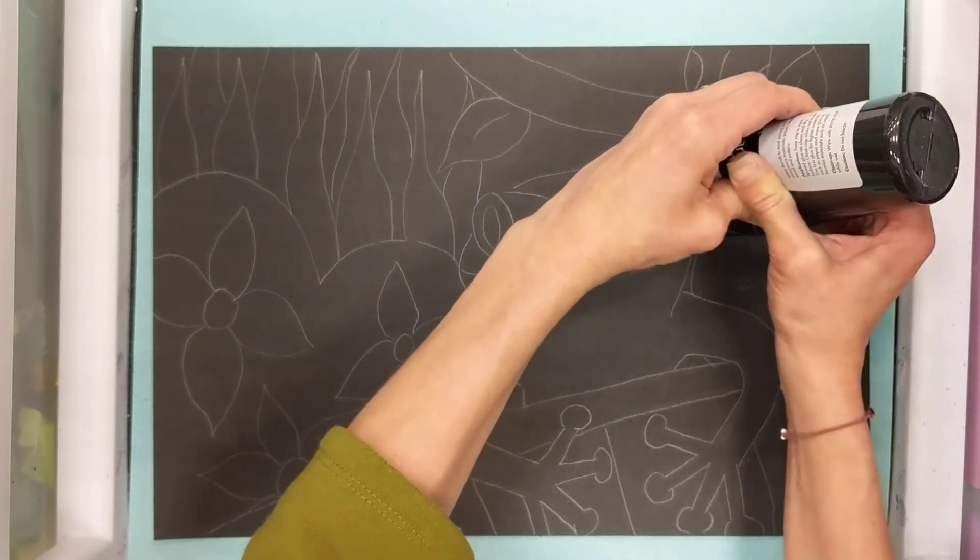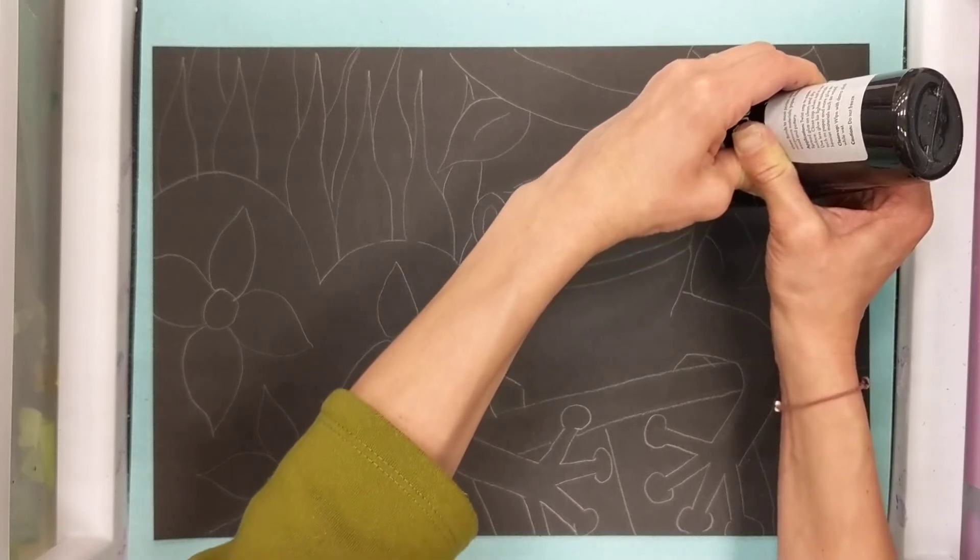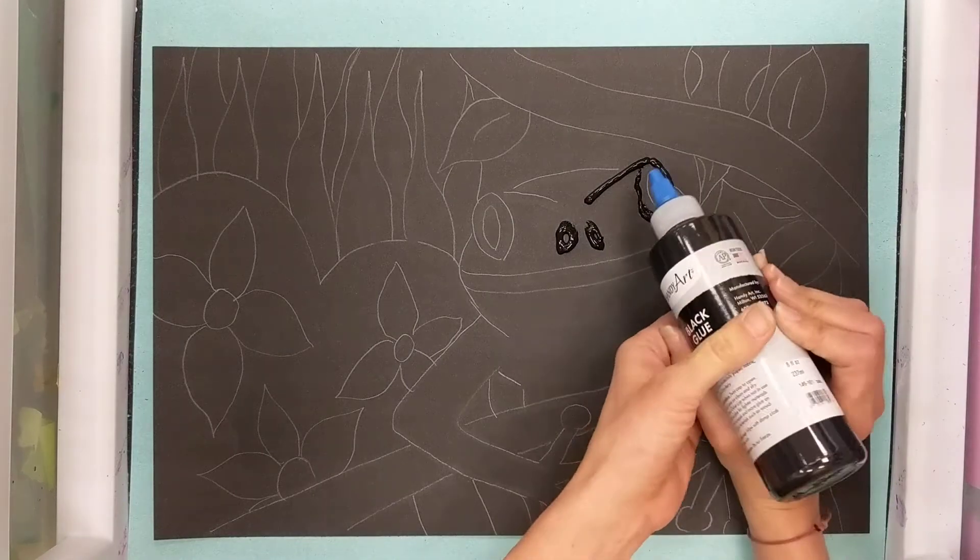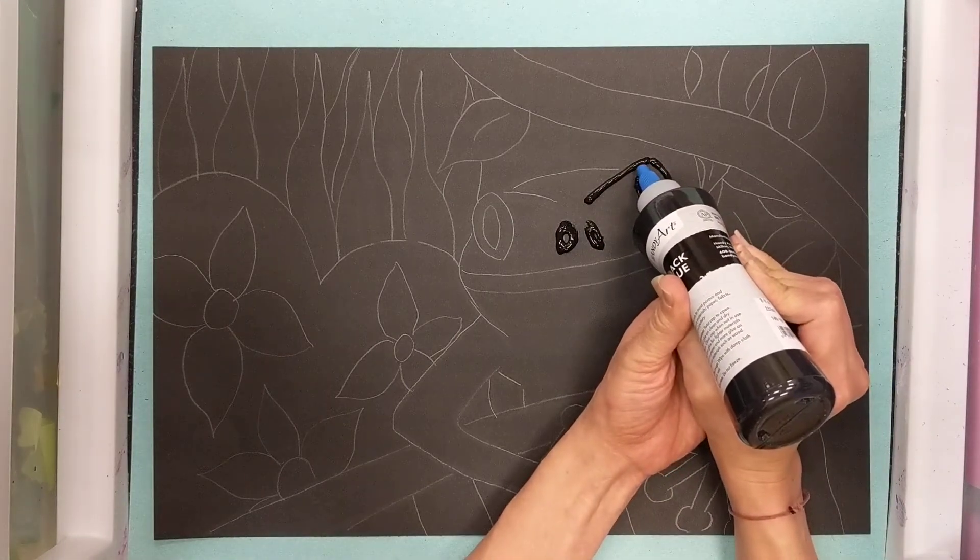I kind of squeeze and go and if it's ever feeling like it's coming out too hard just take a second, stop, and you can go back into it. You don't want to get it too globby.